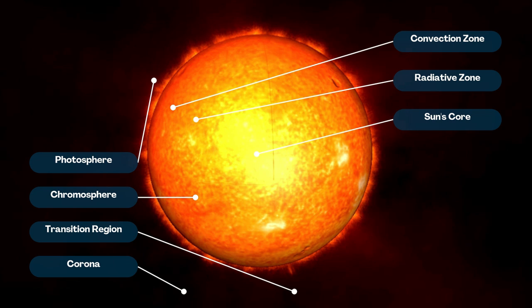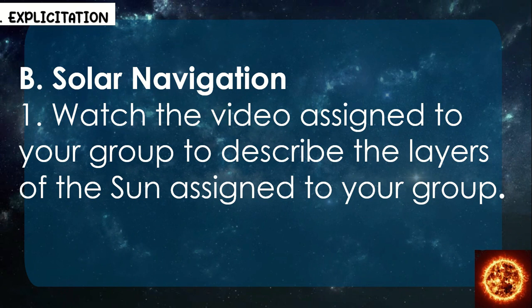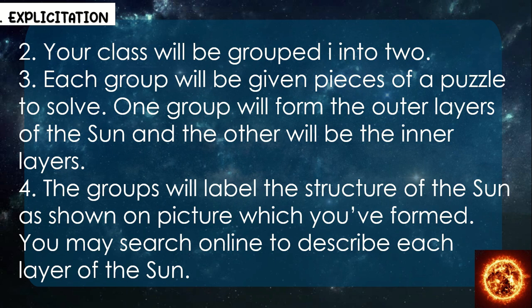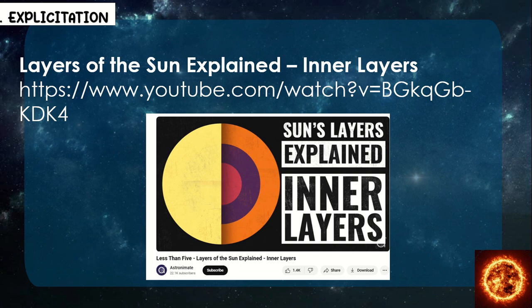Here is another illustration of the different parts of the sun: the sun's core, the radiative zone, and the convection zone; the photosphere, chromosphere, transition region, and corona. Solar Navigation: watch the video assigned to your group to describe the layers of the sun. One group will form the outer layers of the sun and the other will form the inner layers. The groups will label the structure of the sun as shown in the picture which you've formed. You may search online to describe each layer. Here's a YouTube link: 'Layers of the Sun Explained — Inner Layers,' uploaded by Astronimate.